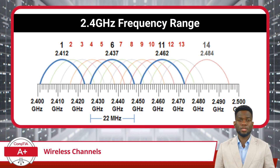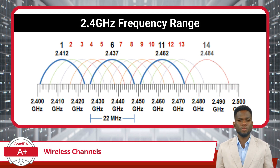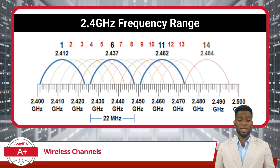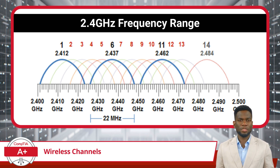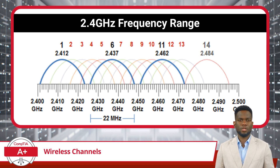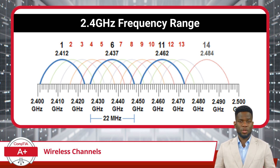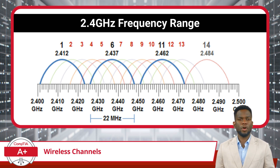In wireless computing, we primarily deal with two frequency ranges: 2.4 GHz and 5 GHz. When it comes to the 2.4 GHz range, it is divided into 14 separate channels, each 22 MHz wide, with typically only channels 1 through 11 being available for use in most countries. This range is widely used due to its compatibility with numerous devices and its ability to penetrate solid objects, offering a good range.